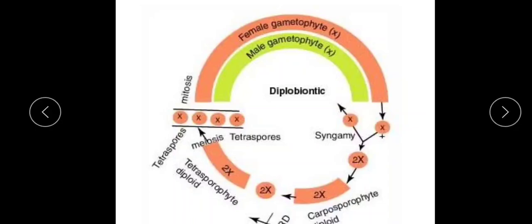The carposporophyte produces diploid carpospores by sporogenic mitosis. These carpospores germinate and form the diploid tetrasporophyte — another independent plant that is not attached to the gametophyte. These tetrasporophyte plants produce tetrasporangia, and inside the tetrasporangia, meiosis (reduction division) occurs, producing haploid tetraspores. These tetraspores then germinate to form the haploid gametophyte, completing the cycle.